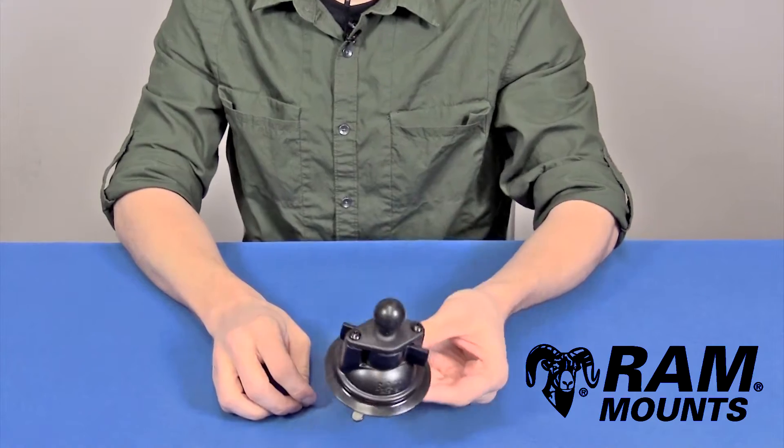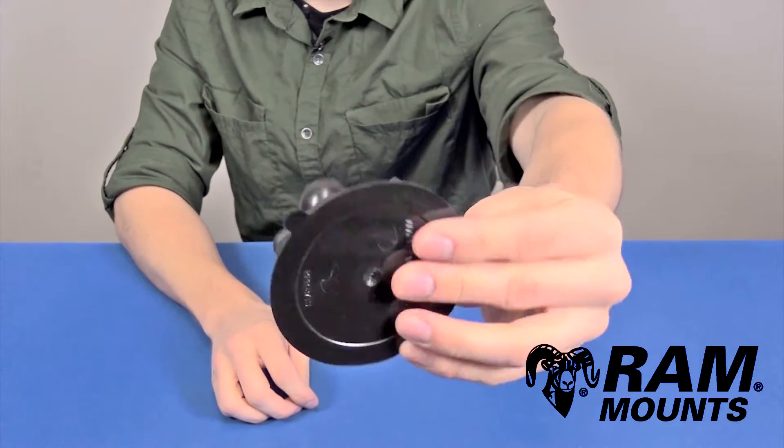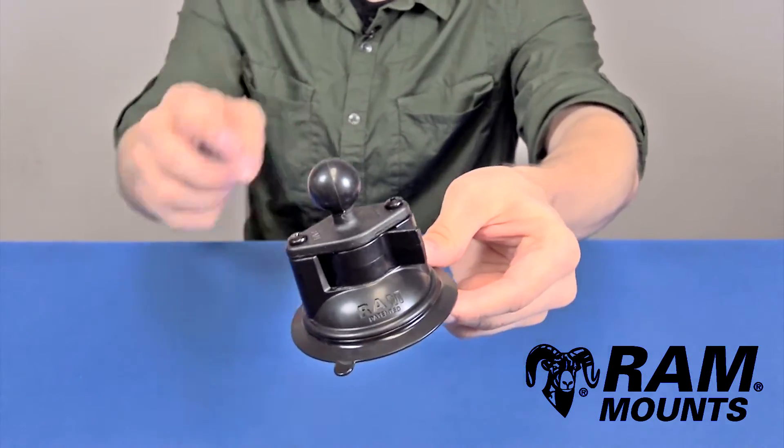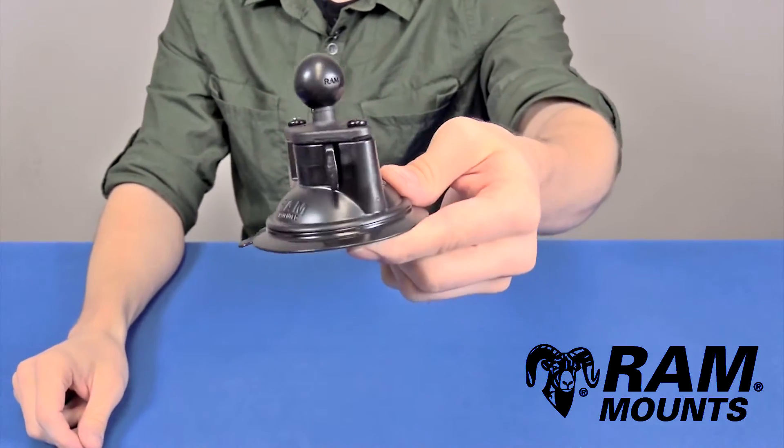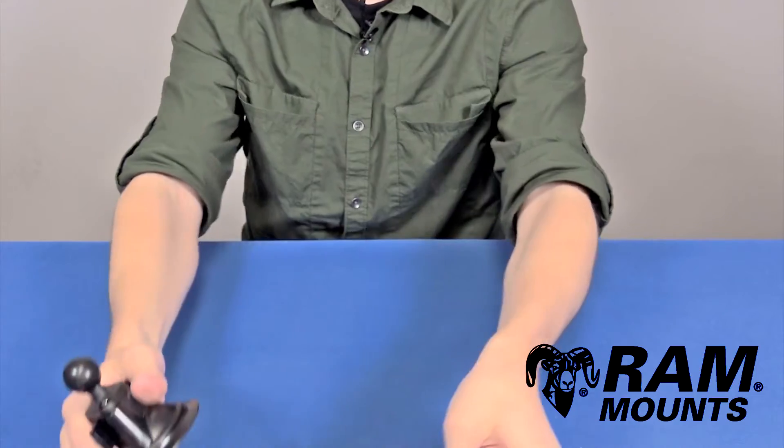Hi everyone, this is Rick with RamMounts, and today we're going to take a look at the Ram Twistlock Suction Cup Ball Plate with the 1-inch B-size rubber ball. This is one of Ram's signature products, best known for its incredibly strong suction.